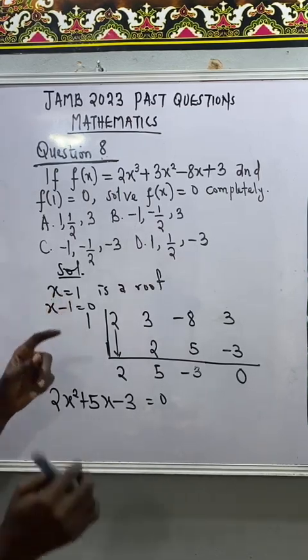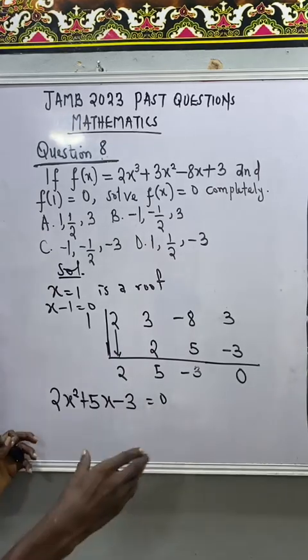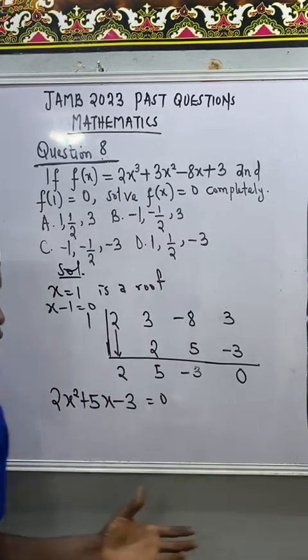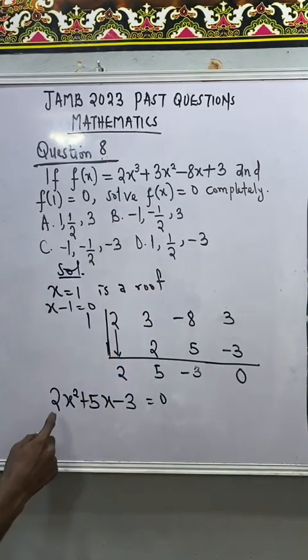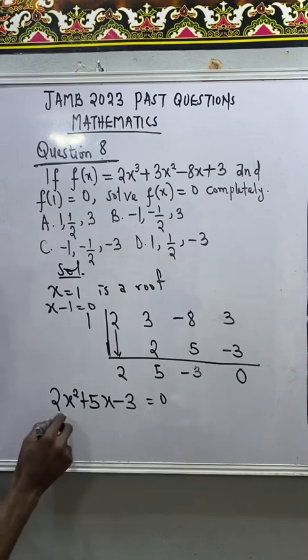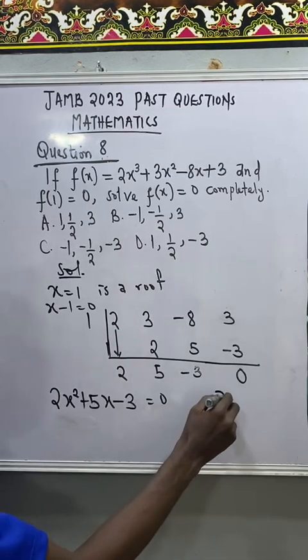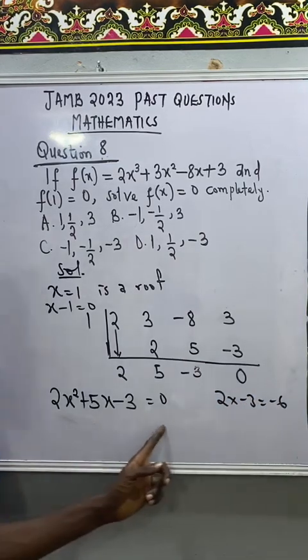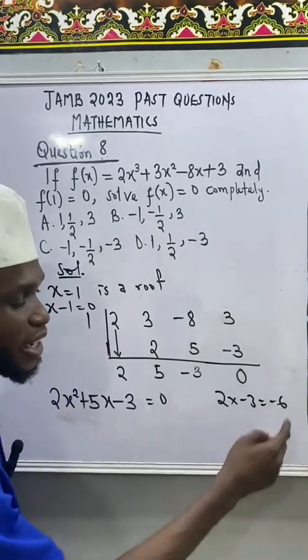Don't forget that x equal to 1 is one of the roots already. We now need this to get the new roots. So now, how can we solve quadratic fast without wasting much time? Multiply this and this together. That is 2 times minus 3. 2 times minus 3. That will give me minus 6. Now, instead of wasting your time too much, just find what you can multiply together.